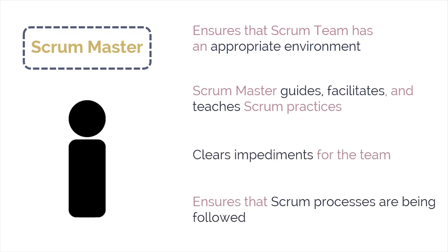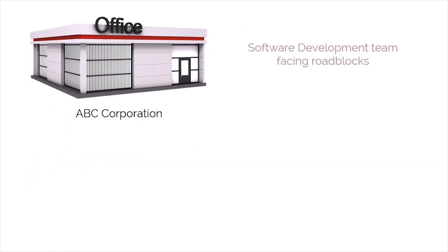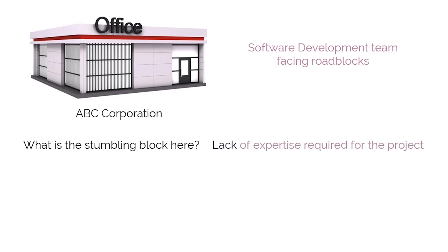To clarify, here's an example. This is ABC Corporation. The software development team at ABC is facing roadblocks lately because they are unable to live up to the set standards of a project in terms of quality. The stumbling block is a lack of expertise required for the project, which in turn leads to delay.